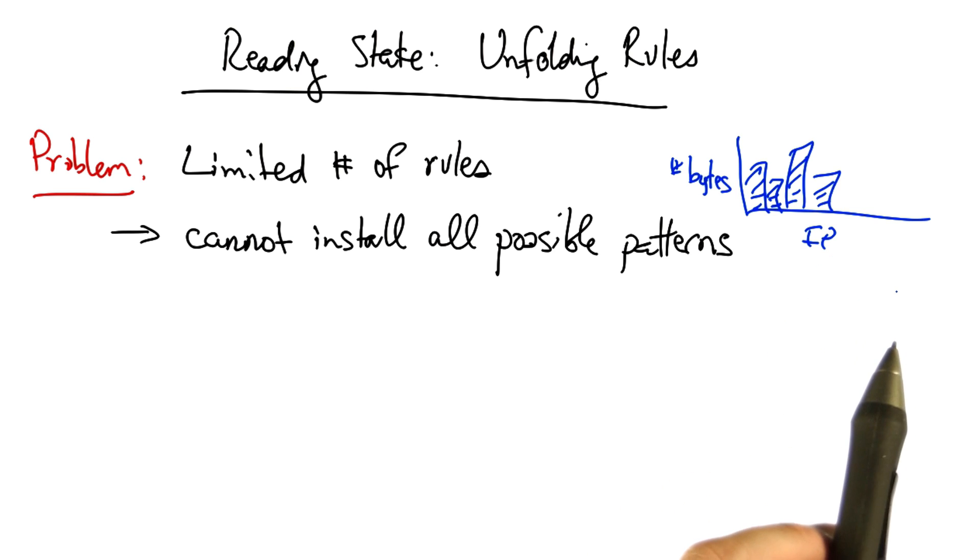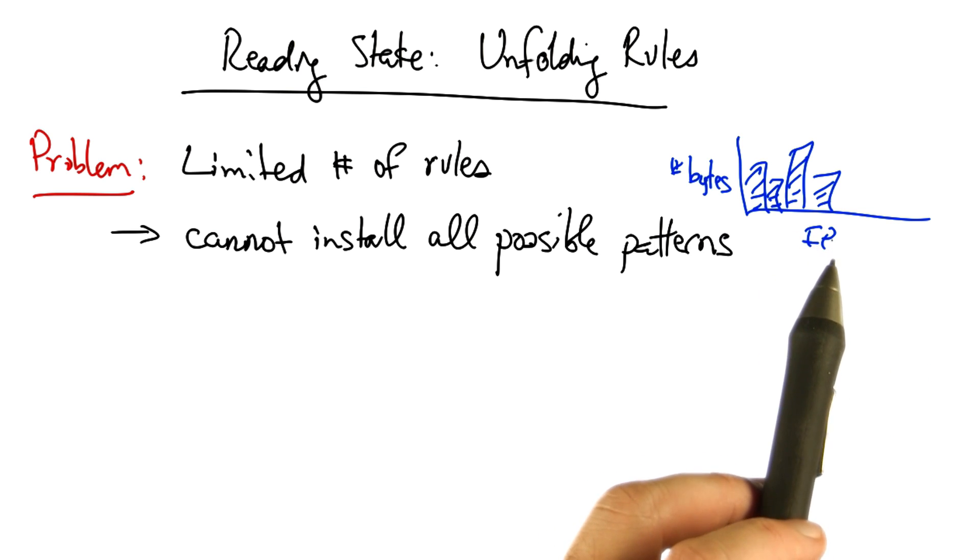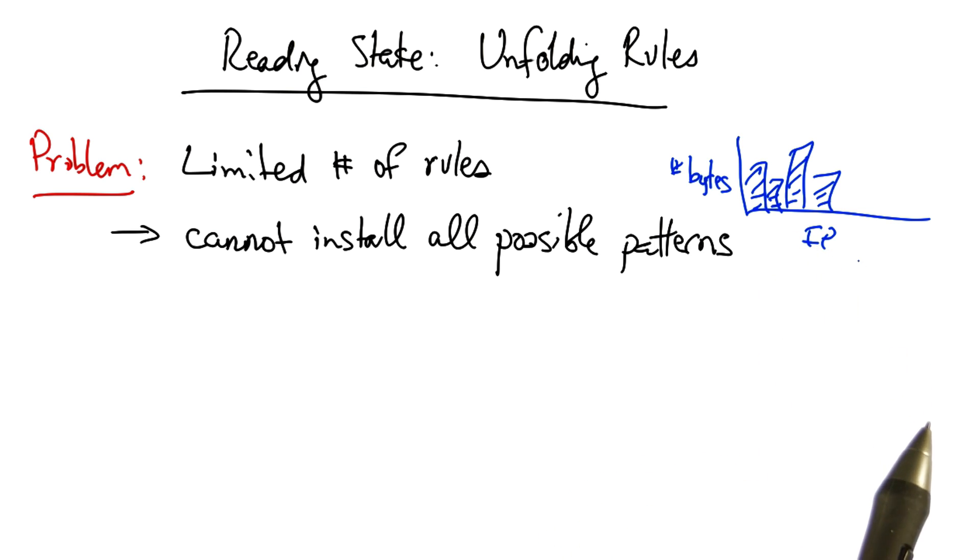For example, if we'd like to count the number of bytes for every source IP address and generate a histogram with the resulting traffic, we would potentially need a flow table entry for every possible source IP address.